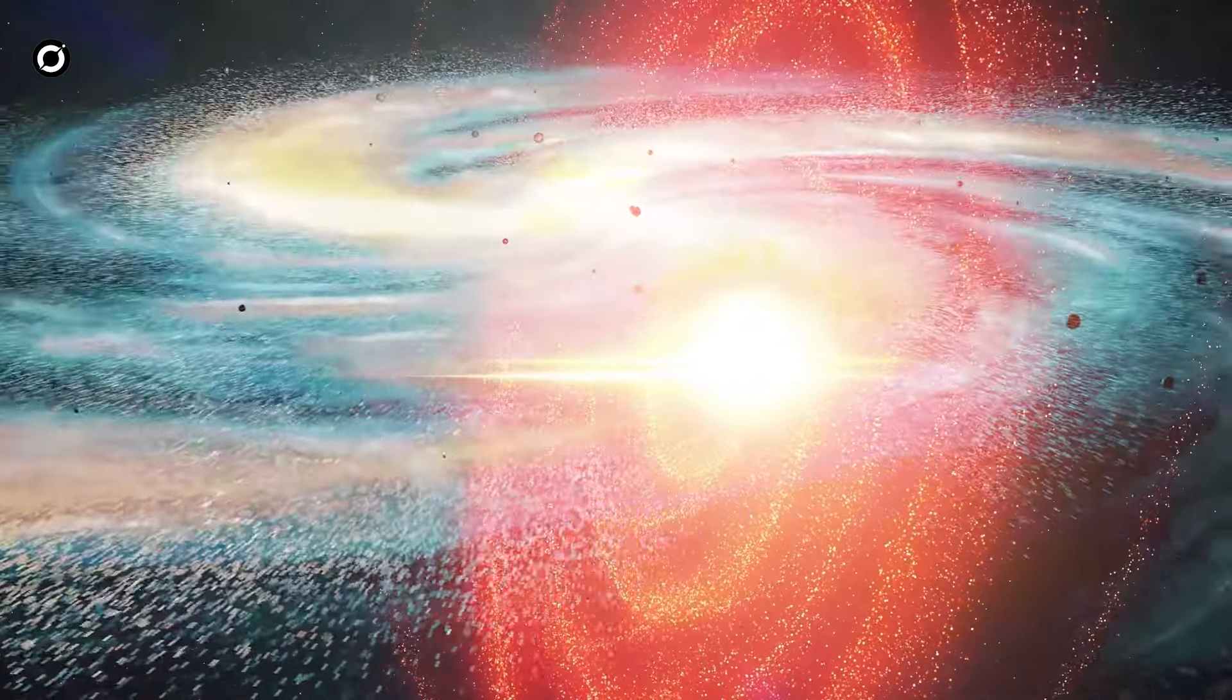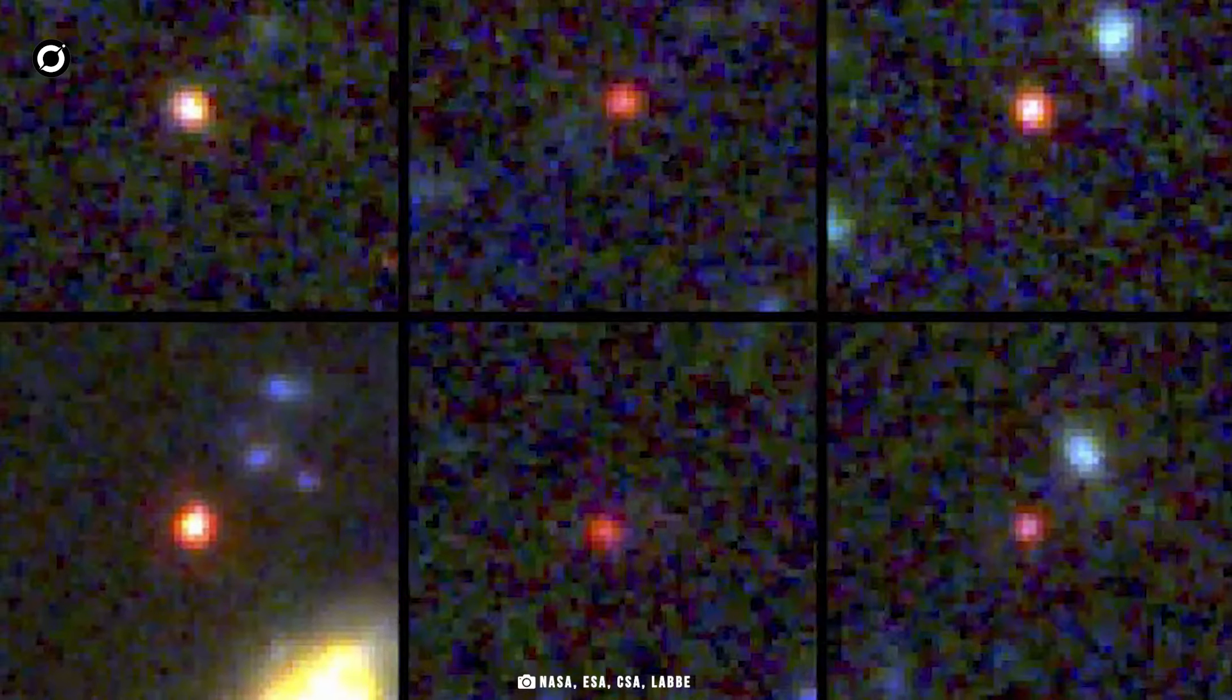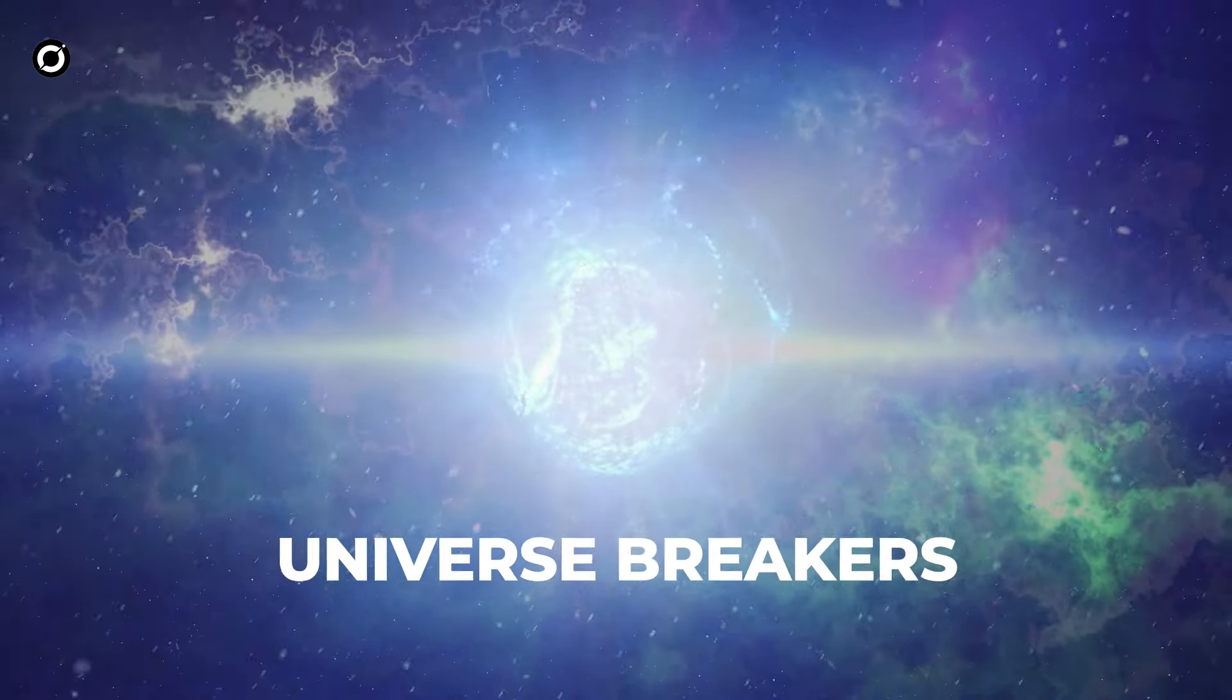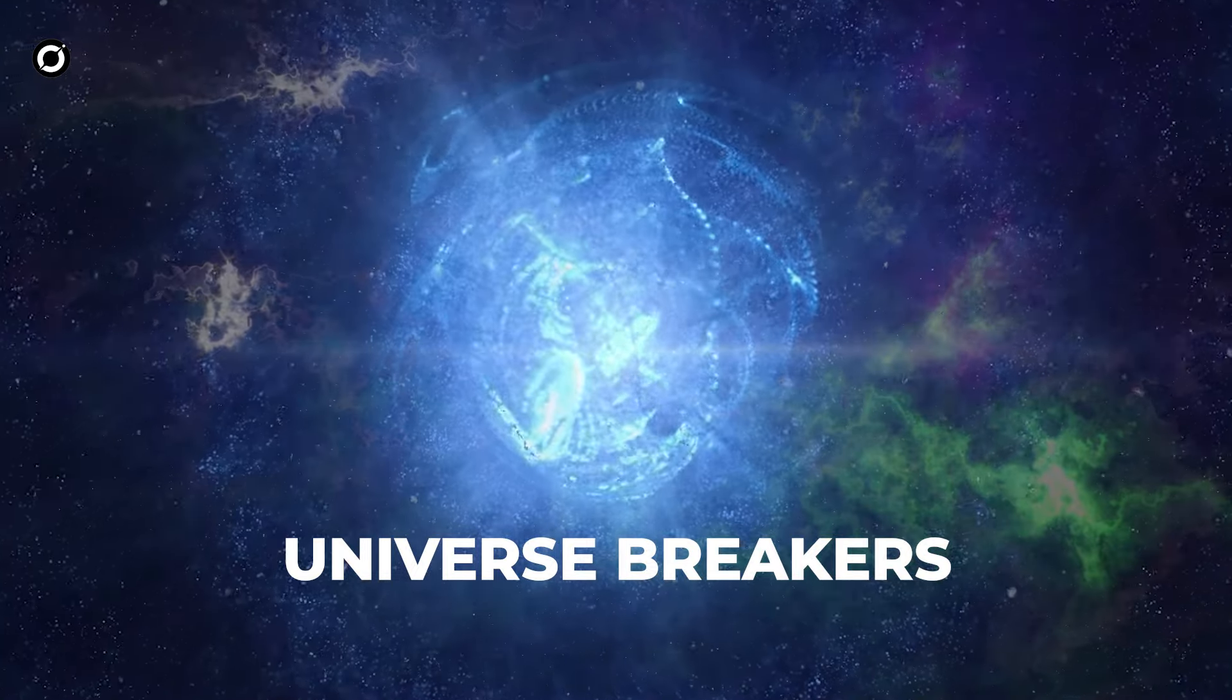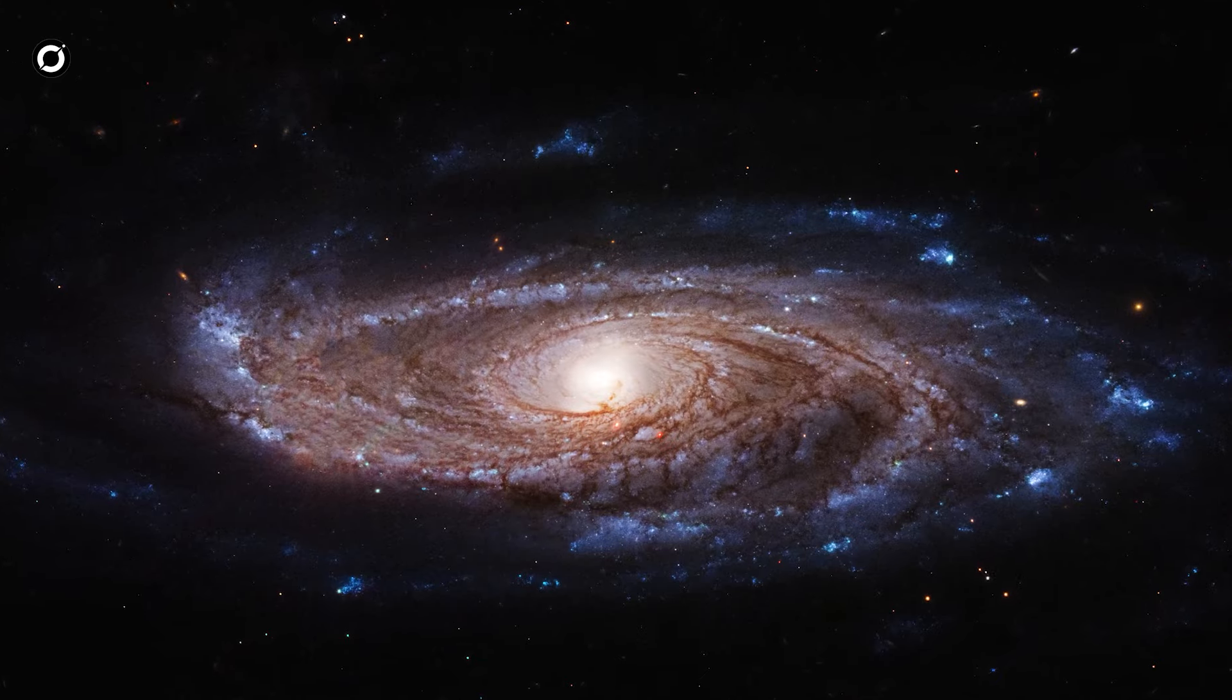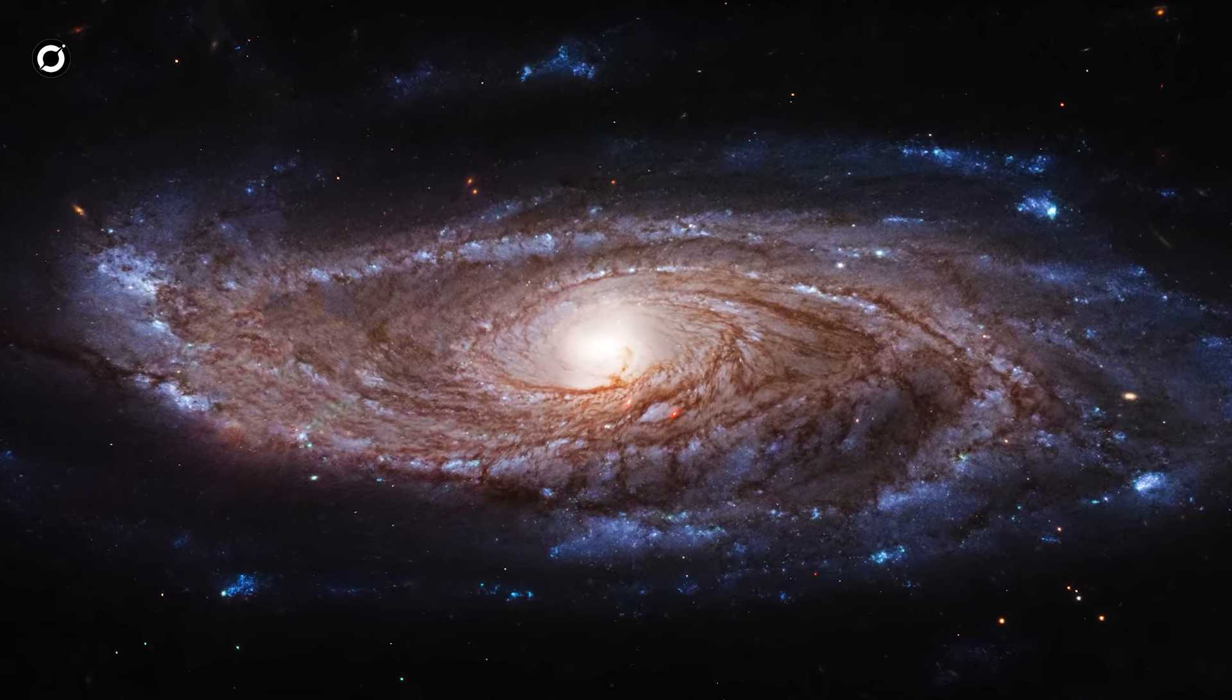Recently, a group of galaxies from the dawn of the universe that are so massive they shouldn't exist—the six gargantuan galaxies which contain almost as many stars as the Milky Way despite forming only 500 to 700 million years after the Big Bang—have been dubbed 'universe breakers' by the team of astronomers that spotted them. That's because if they're real, the discovery calls our entire understanding of galaxy formation into question.